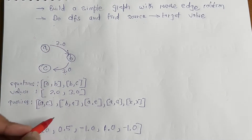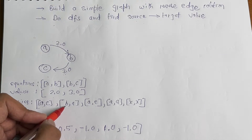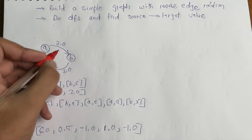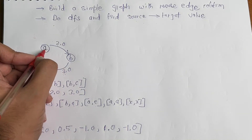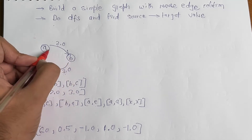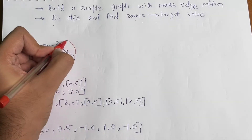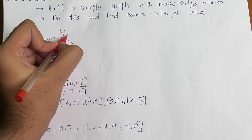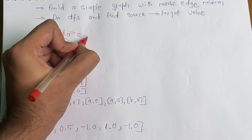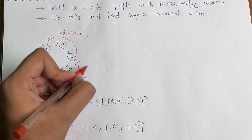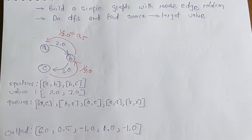For the query b→a, there is no direct relation, which is why we build the graph with reverse edges. While adding a→b, we also add b→a with value 1/2.0 = 0.5. Similarly, we add c→b with value 1/3.0. That is how we build the graph while adding edges.